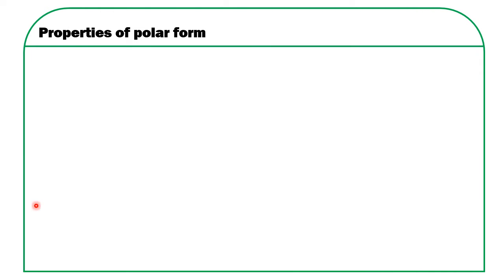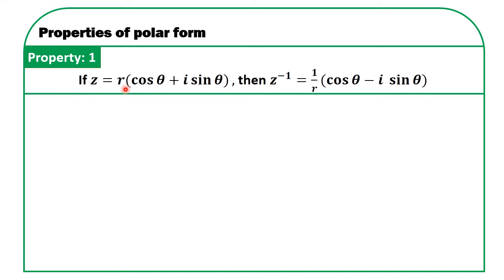Now let me explain the properties of polar form. Property 1: if z = R(cos θ + i sin θ), then z⁻¹ = (1/R)(cos θ − i sin θ).